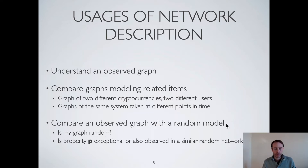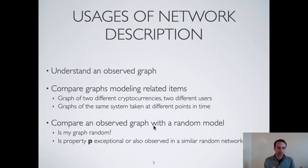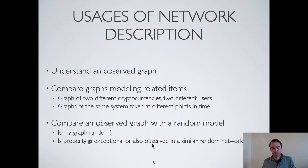Finally, another important application is to compare your graph with a random model. Random models are quite important in network science because when you observe something, you don't know if it's expected in a random case or if it's exceptional. That's why you often need to compare with a random model — to check if a property is exceptional or if it would be the same in a similar random network.